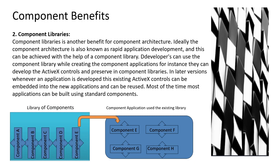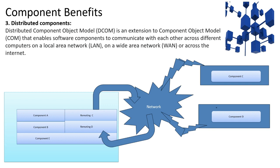Here we can see that Component E has been reused in a component application. The other major benefit is distributed components. Distributed components is an extension to the Component Object Model that enables software components to communicate with each other across different computers on a local area network, wide area network, or across the internet. Component C and Component D may be available on a remote machine, yet the client will never notice — the end user can use the application seamlessly even though components are remotely located.